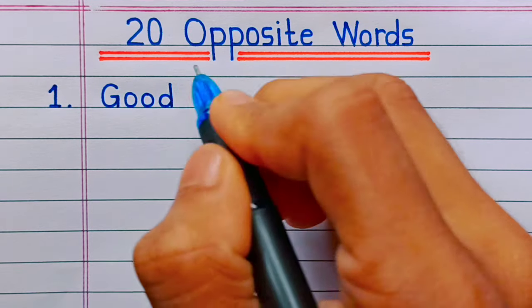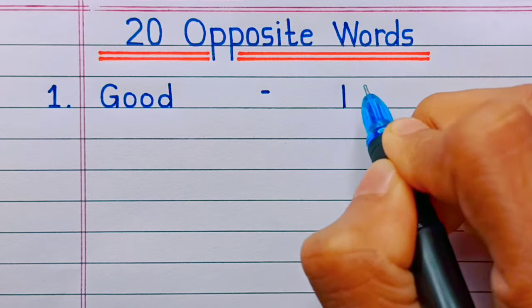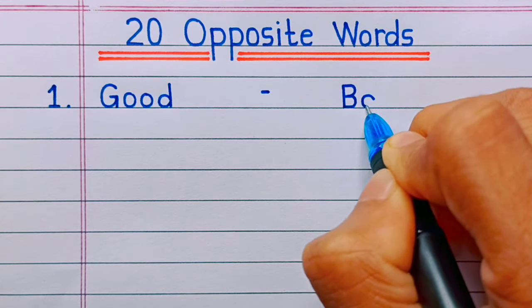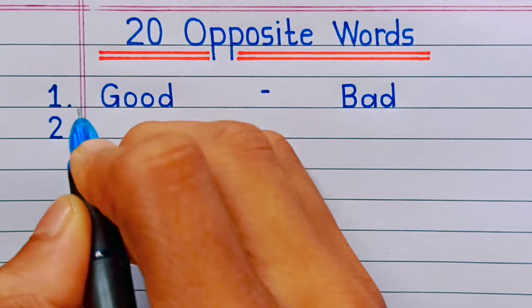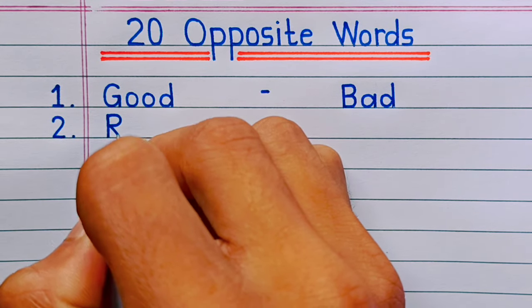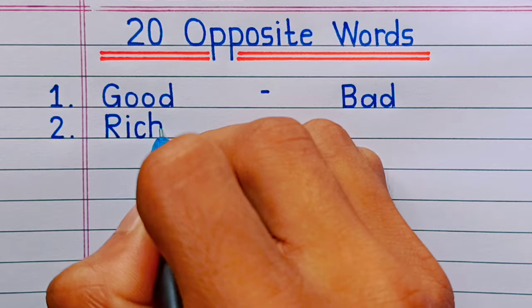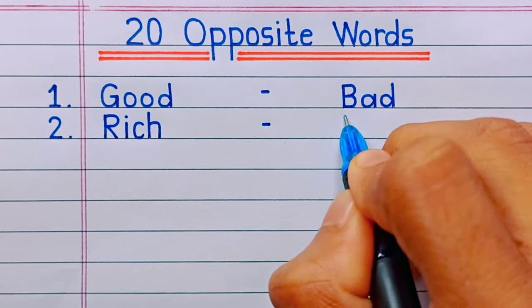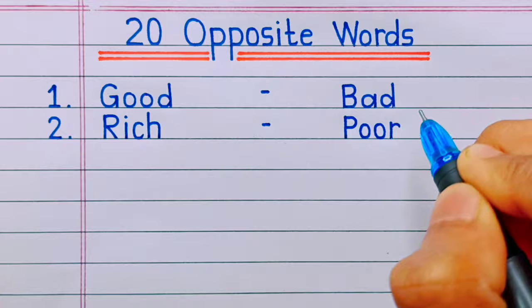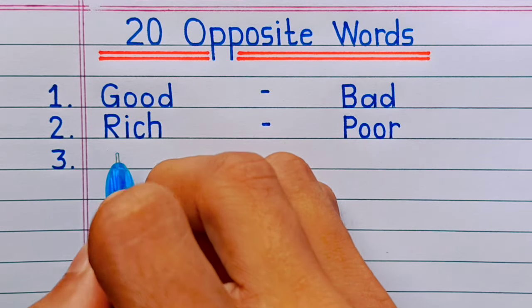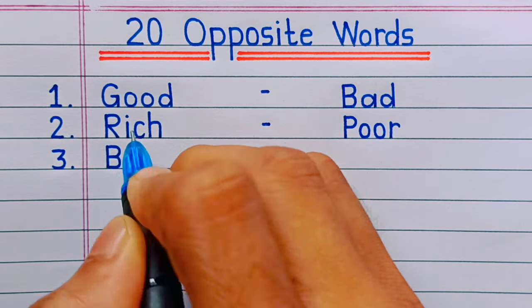So first, number one: good, bad. Number two: rich, poor.